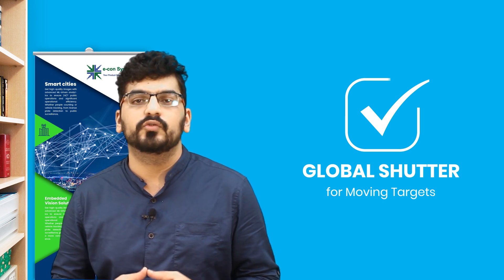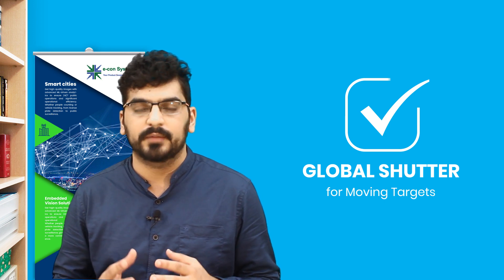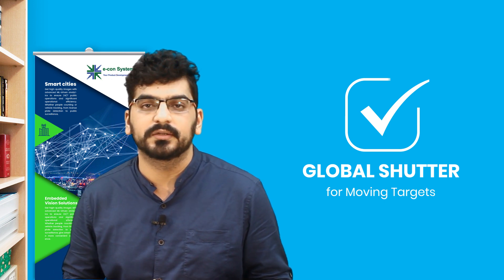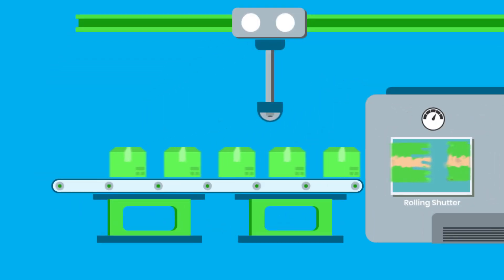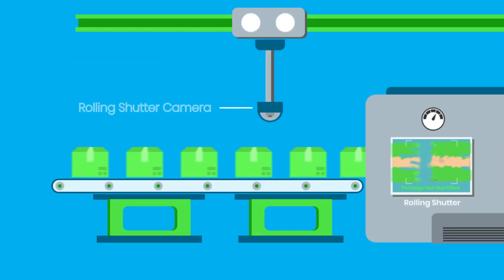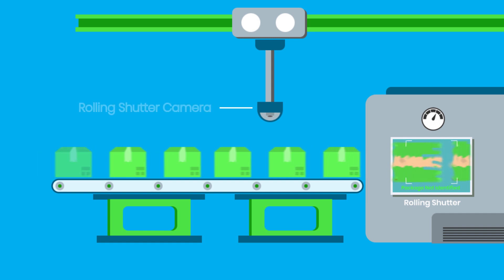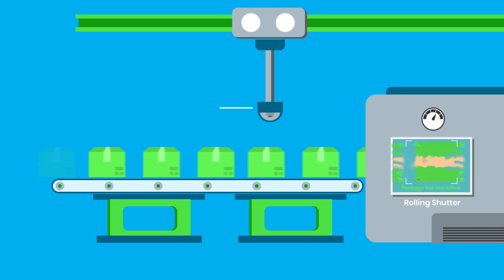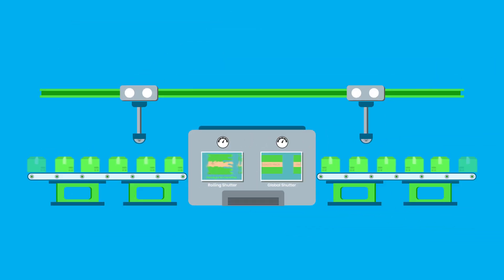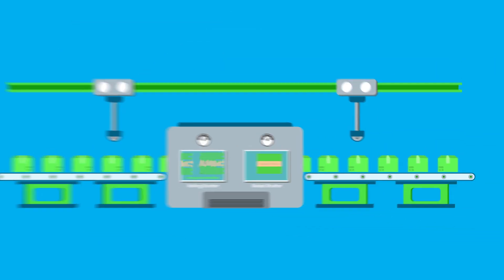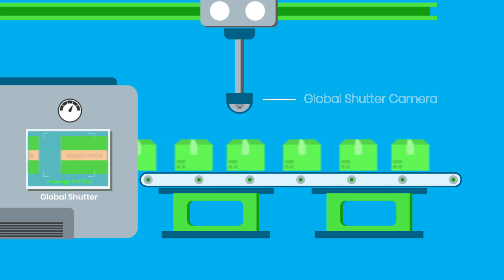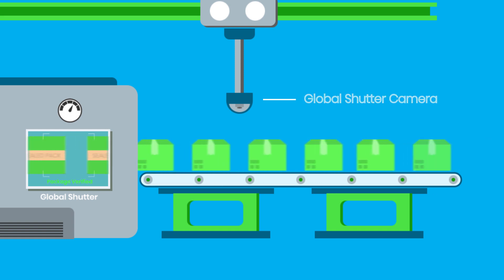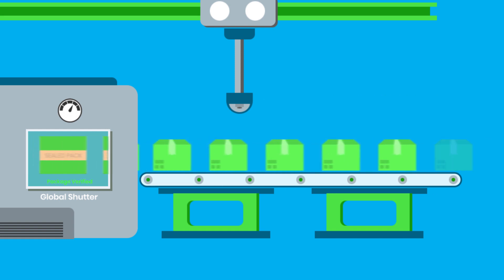So is a global shutter camera enough to combat motion blur? Not always. Even when all pixels are exposed at the same time towards the target, if they are exposed for a long enough time, the target would have moved and there would still be motion blur.